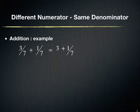As you can see, we have added 3 and 1 while keeping the denominator as 7. The addition of these two fractions comes as 4 upon 7.